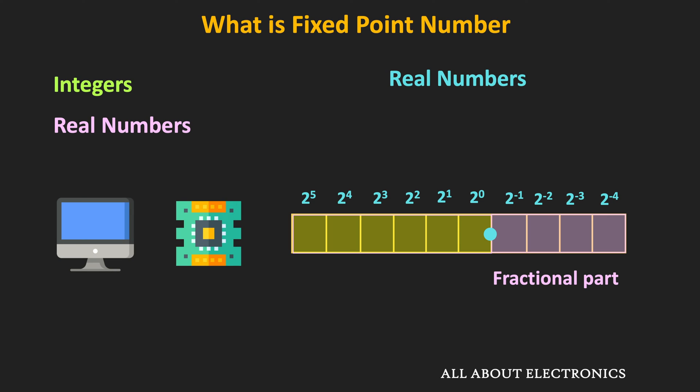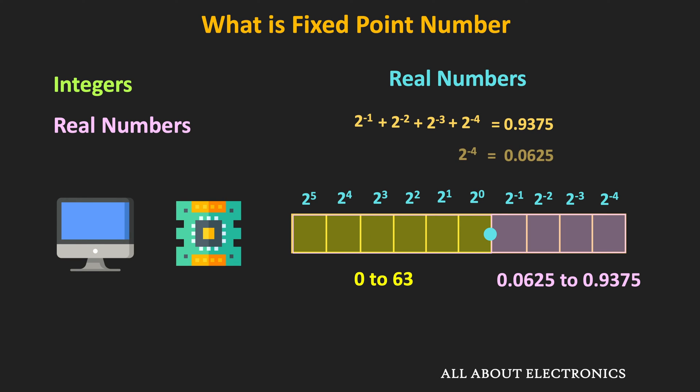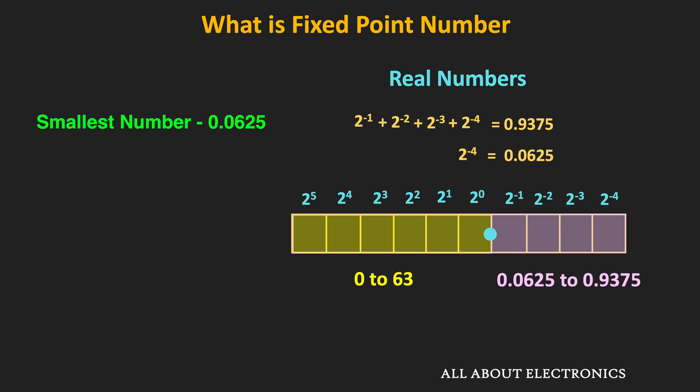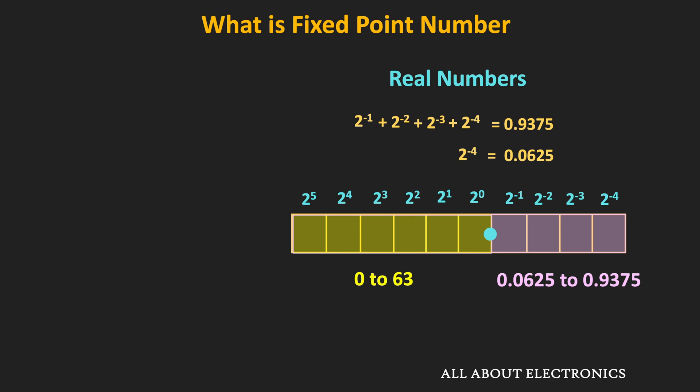Out of the 10 bits, if we reserve 6 bits for the integer part, then for unsigned numbers we can represent any number between 0 to 63. For the fractional part, the maximum number we can represent is 0.9375, and the minimum non-zero number is 0.0625. That means in 10-bit format, the minimum non-zero number we can represent is 0.0625, while the maximum number is 63.9375. In general, in fixed point representation, the location of the radix point is fixed, and once we decide it, it will not change. So in a 10-bit fixed point representation, once we freeze a specific format like 6 bits for integer and 4 bits for fraction, we cannot represent any number smaller than 0.0625.